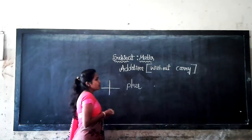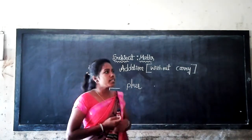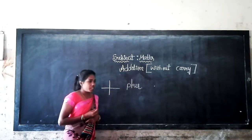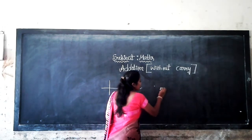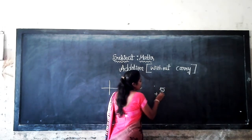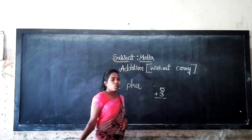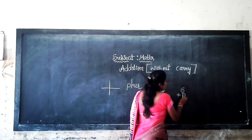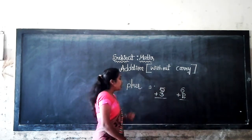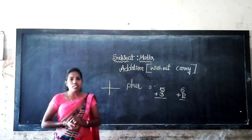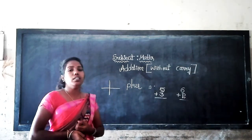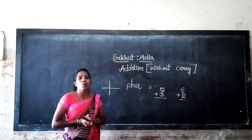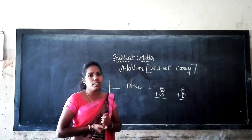As I told you, in the previous class you already know about additions, isn't it? Yes. For example, 5 plus 3. I will give one more example: 6 plus 2. Now you find the sum of 5 and 3. It is the sum of 5 and 3. Already you know. It is 5, isn't it? Yes.